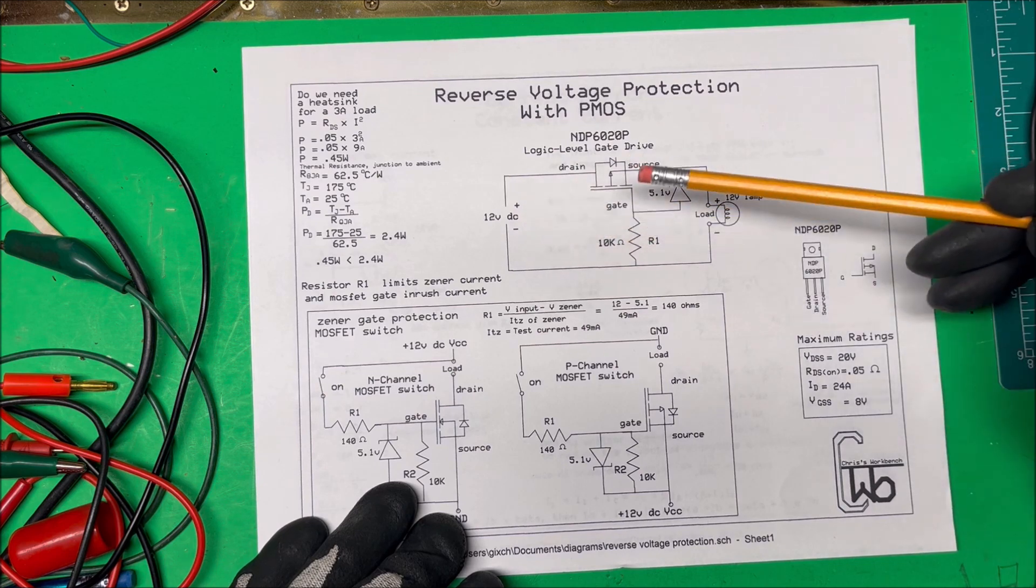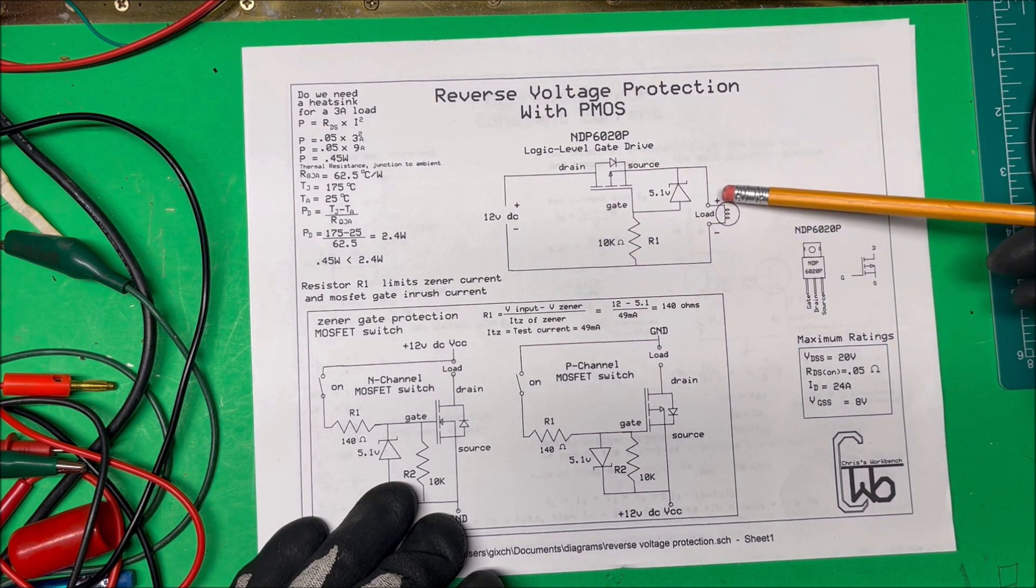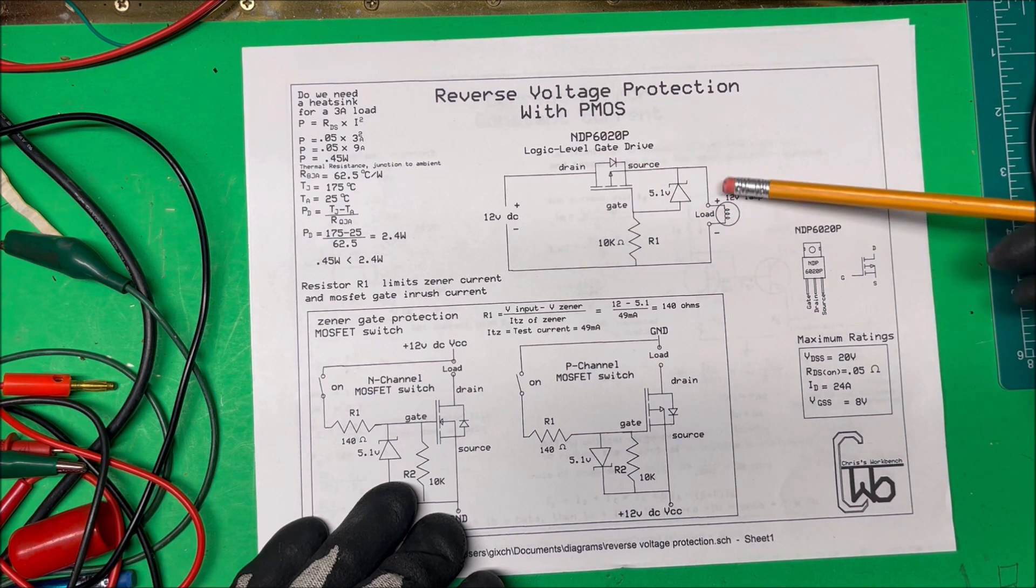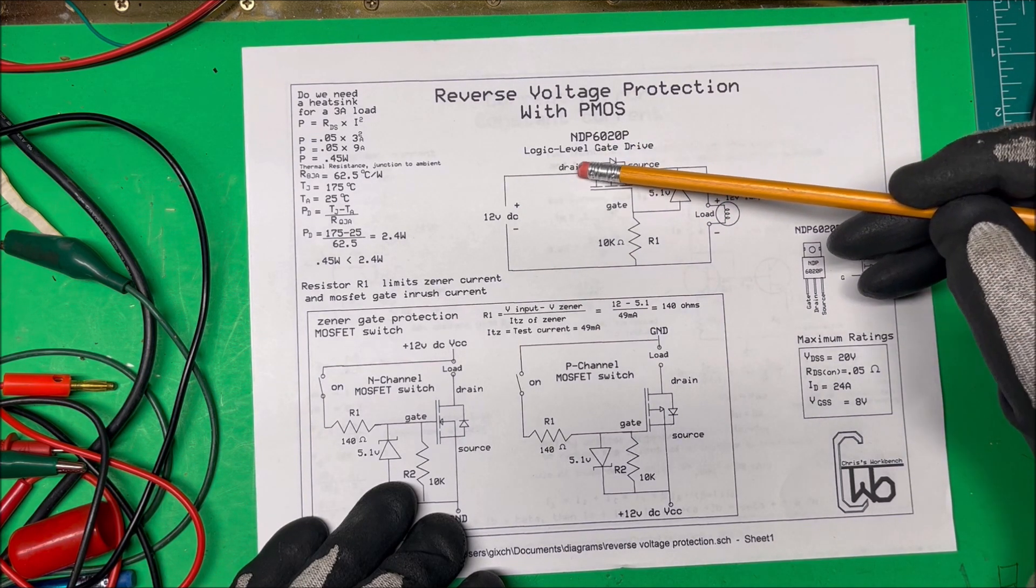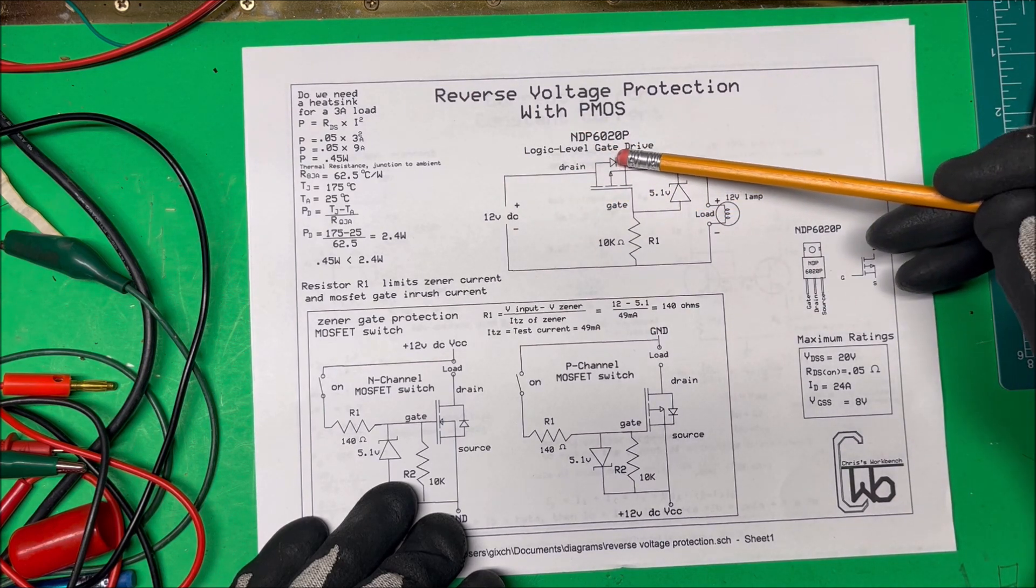Now if we make a mistake and we put negative here and positive down here, the gate's going to go positive, so it's not going to turn on. We're going to actually have positive voltage up here through the load, but it can't go through this diode here back to the negative side.